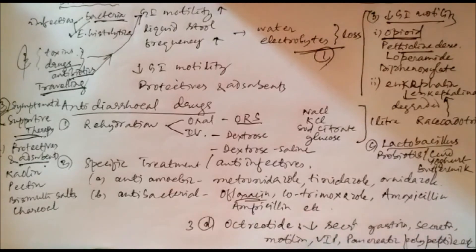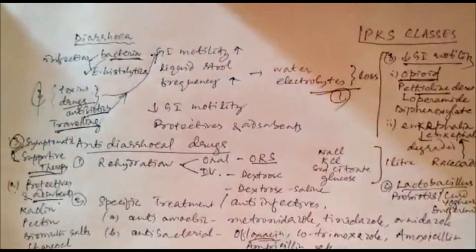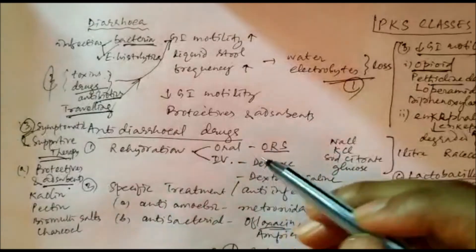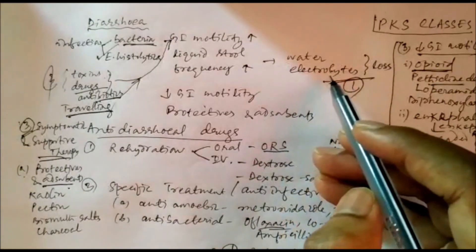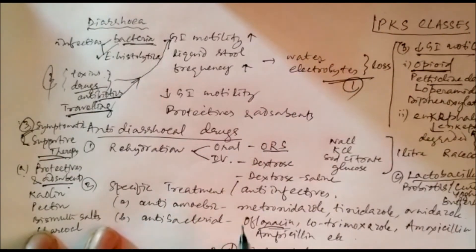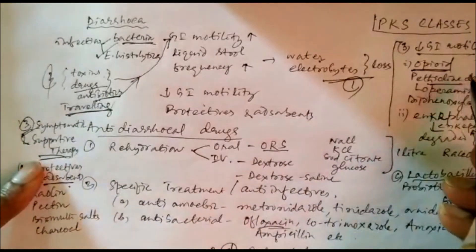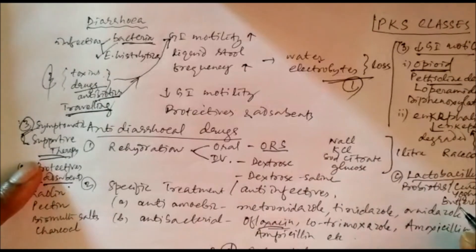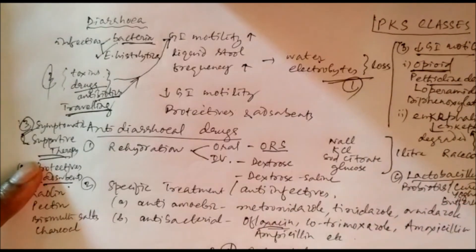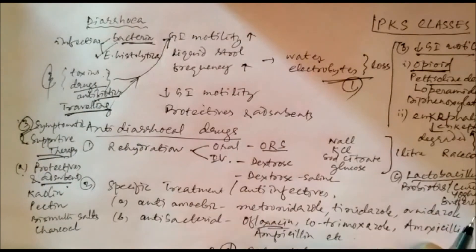Octreotide also reduces vasoactive intestinal peptide and pancreatic polypeptide. Because of this action it reduces GI secretions and can be used in case of diarrhea. In this way we can treat diarrhea by compensating water and electrolyte loss, specifically killing microorganisms, adsorbing toxins, reducing GI motility, compensating bacteria loss with lactobacillus, or using the synthetic somatostatin analog octreotide.